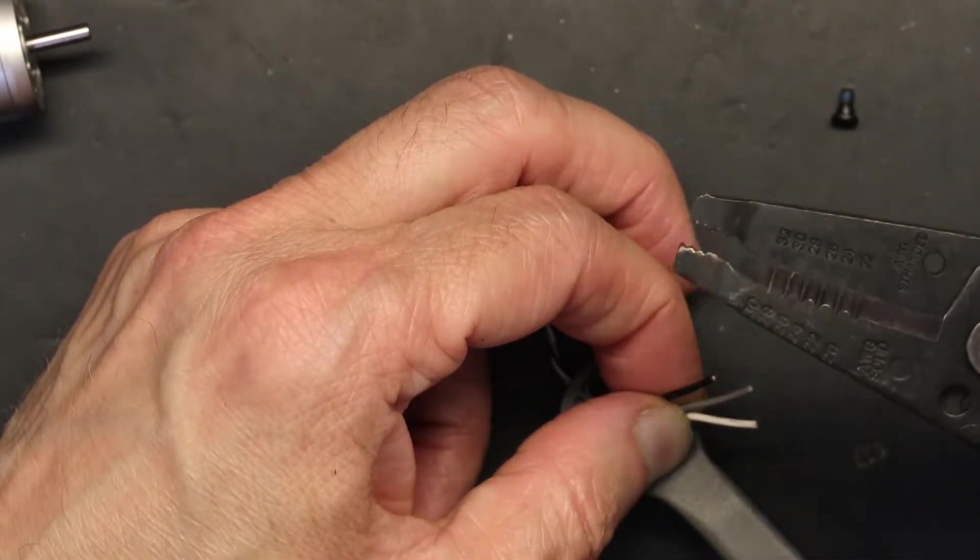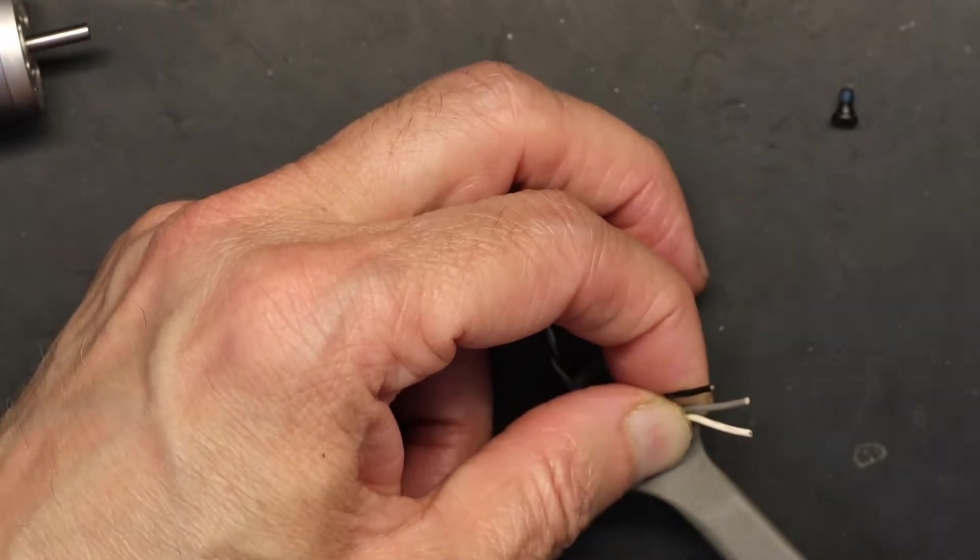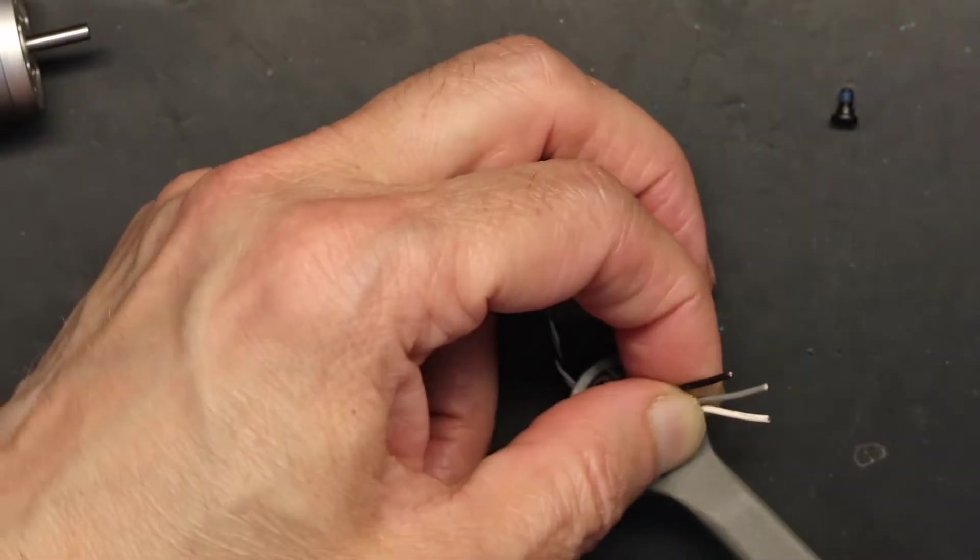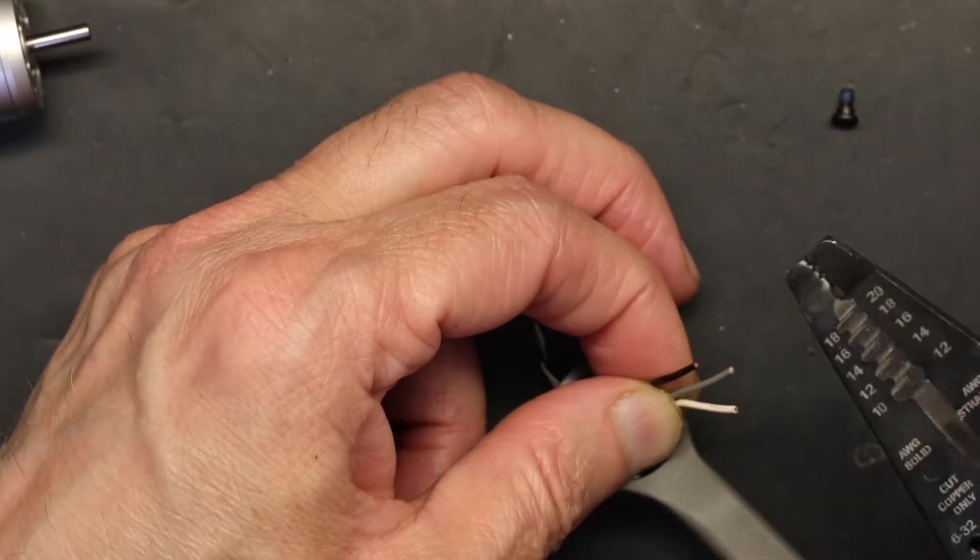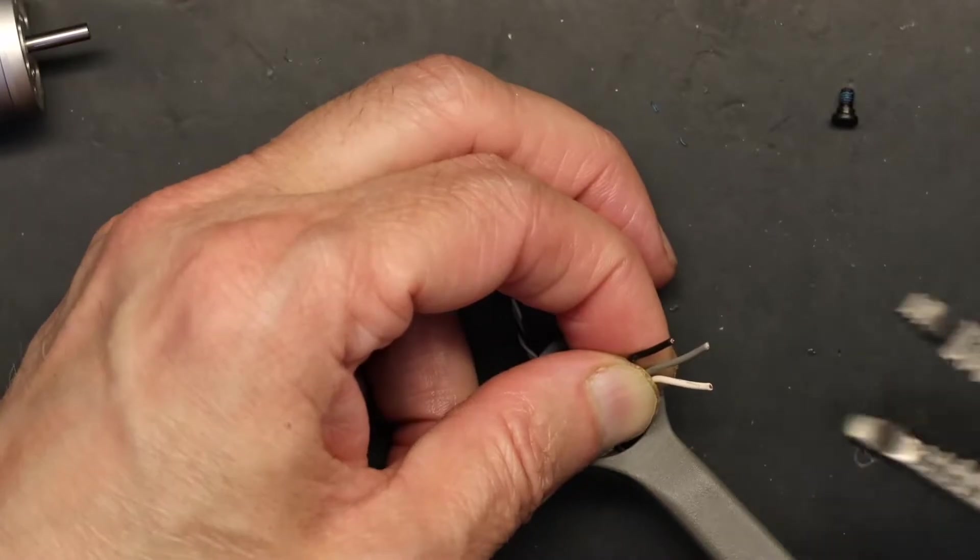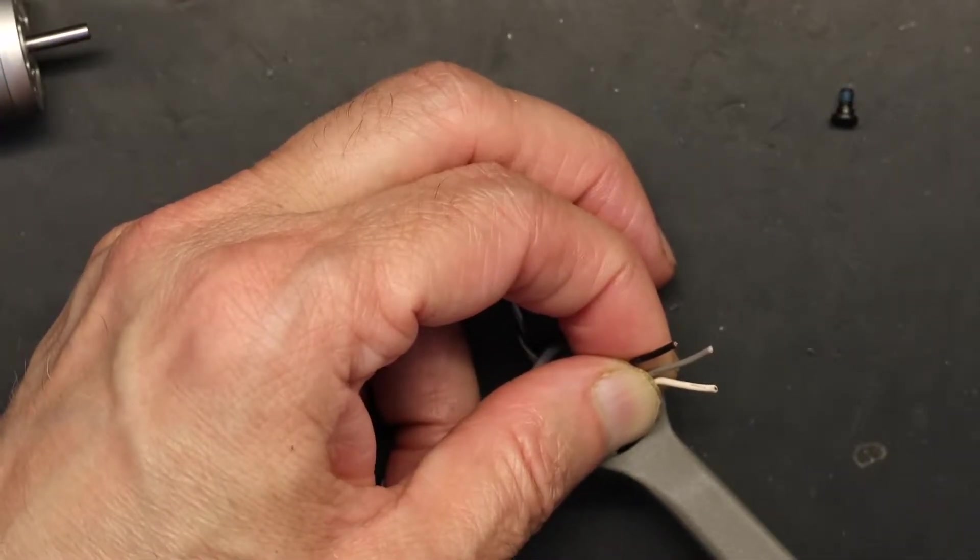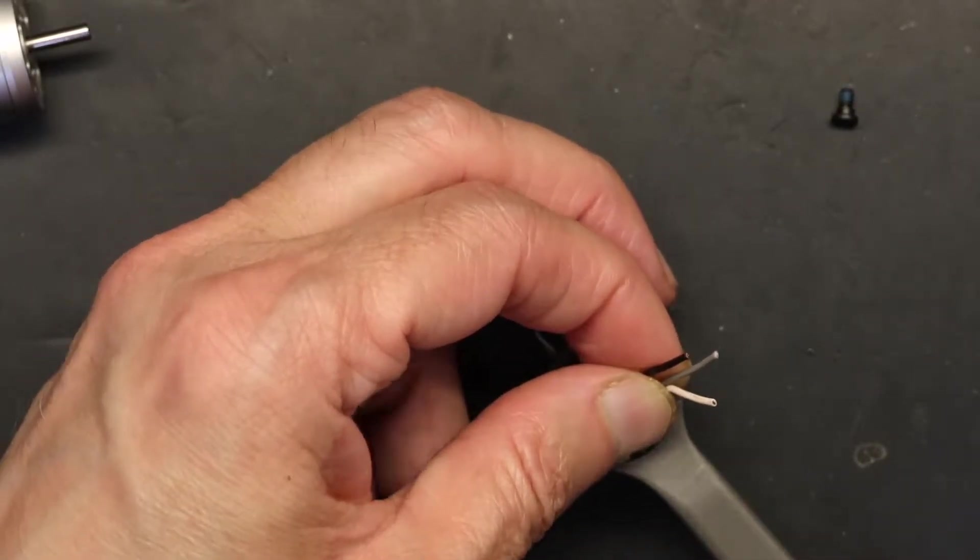This is way too small. If your stripper is too small it will damage. I believe number 20 is the one I want, so let's strip this with number 20. It's good to get a longer gauge instead of damaging the wire.